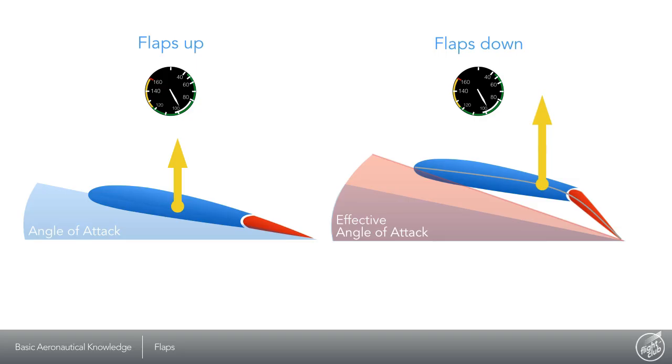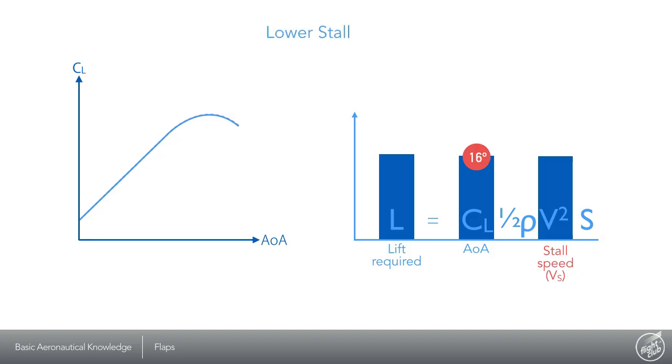With flaps down, the aircraft may also fly slower yet generate the same amount of lift as with flaps up. With flaps down, the stall speed is lower, allowing the aircraft to maintain a safe level flight at slower airspeed.